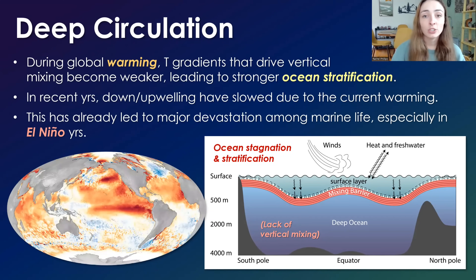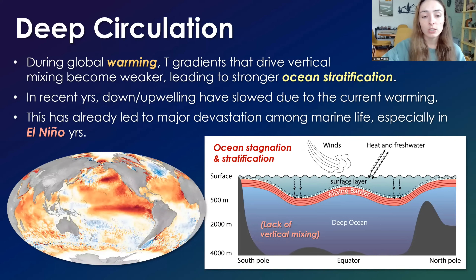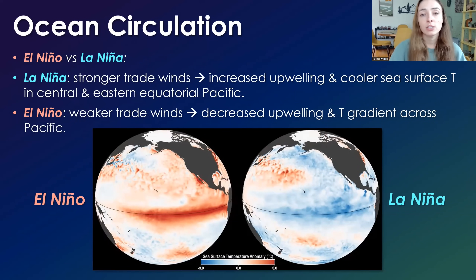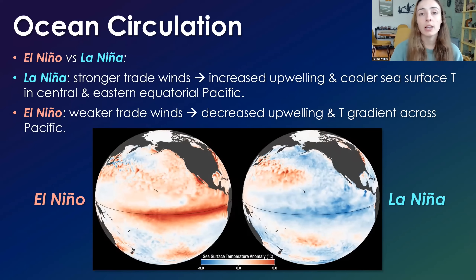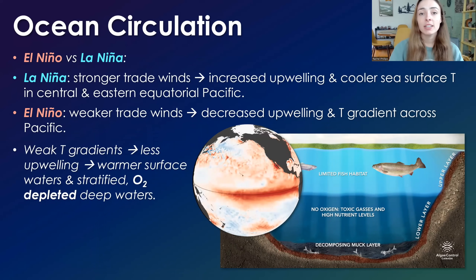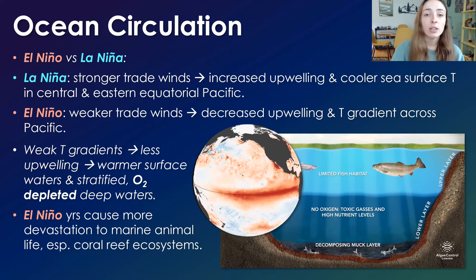When there's major stratification or stagnation of the water column and the deep water becomes really anoxic, this can be devastating for life. We've already seen some major devastation due to ocean stratification in recent years among marine life, especially during El Niño years. La Niña years feature stronger trade winds that cause an increase in the strength of upwelling and thus cooler sea surface temperatures in the central and eastern equatorial Pacific. Whereas El Niño years are characterized by weaker trade winds, which weaken upwelling and temperature gradients across the Pacific, leading to less mixing, more stratified ocean columns with warmer surface waters, and very oxygen-depleted or anoxic deep waters. El Niño years typically cause more devastation to marine life than La Niña years, especially to coral reef ecosystems.